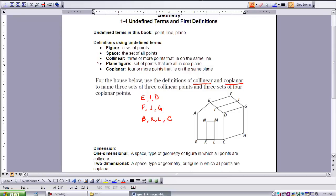As you can see, I've listed some points. E, I, D, they all lie in the same line. F, J, G, also lie in the same line.